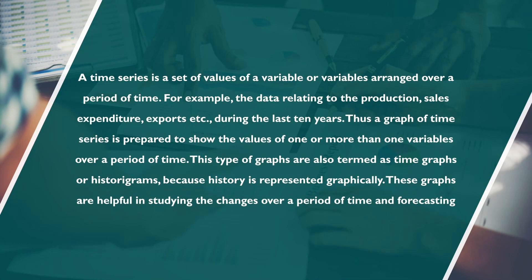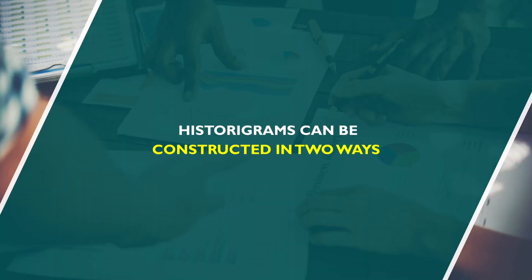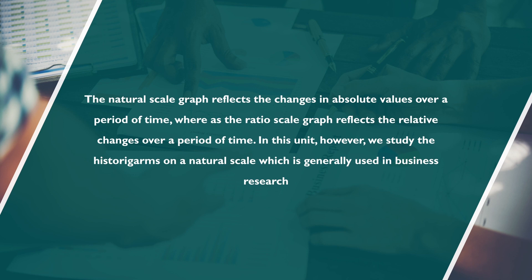Examples related to time series include data relating to production, sales, expenditure, and exports during the last 10 years. The graph of time series is prepared to show values of one or more variables over a period of time. Such graphs are termed as time graphs or histograms. When we talk about time series, we talk about past records. Histograms can be constructed in two ways: on a natural scale (arithmetic scale) and on a ratio scale.